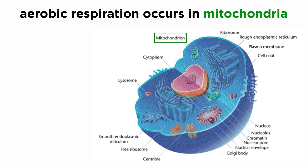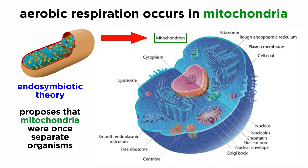The location in the cell where this process occurs is the mitochondria, which are eukaryotic cell organelles. According to endosymbiotic theory, mitochondria seem to have been entirely separate organisms that were incorporated into eukaryotes, specifically for the respiratory abilities they possessed.